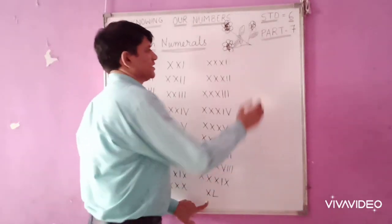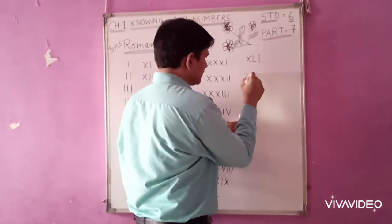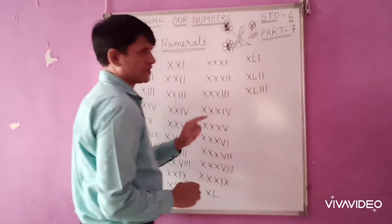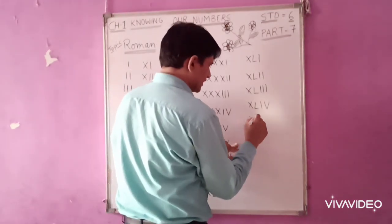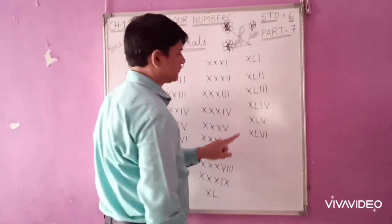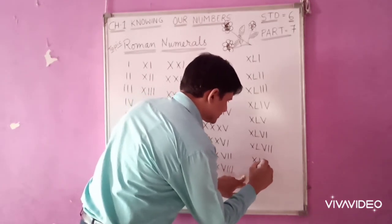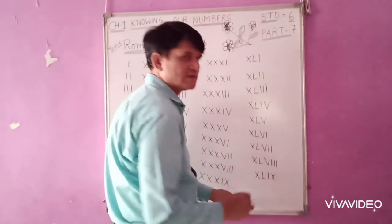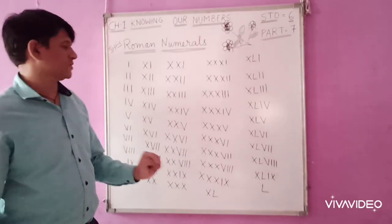40 is written as XL — that is 50 minus 10. So XL is 40. Then 41 is XLI. Continue this process: XLII is 42, XLIII is 43, XLIV is 44, XLV is 45, XLVI is 46, XLVII is 47, XLVIII is 48, XLIX is 49. And L stands for 50. These are the numbers from 1 to 50.